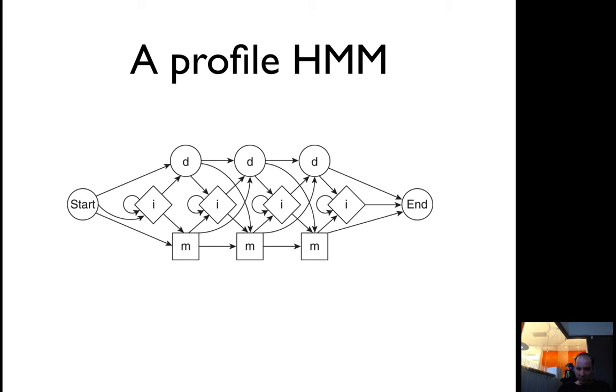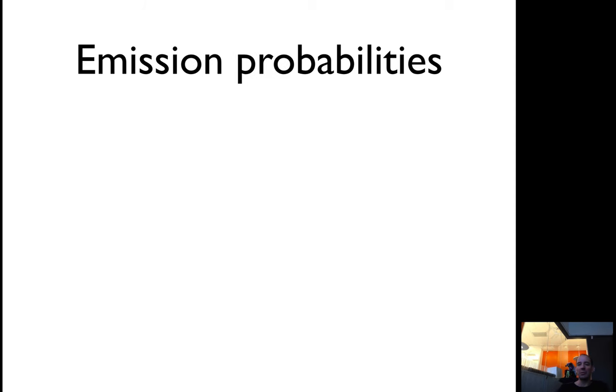You can do that using dynamic programming. You can ask: given the sequence, what is the most optimal path? Or the most likely path? Or what is the probability that this sequence is generated using all possible paths? All these things can be done using different versions of dynamic programming.